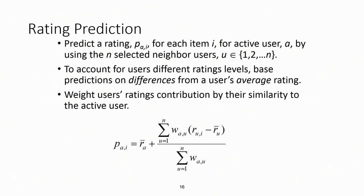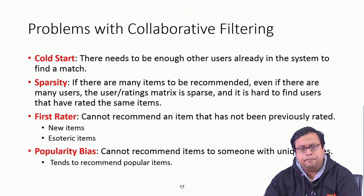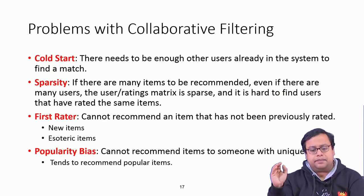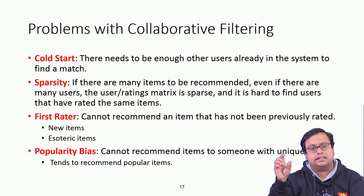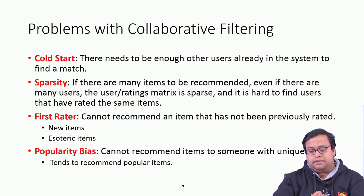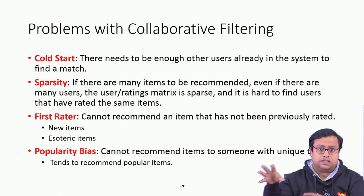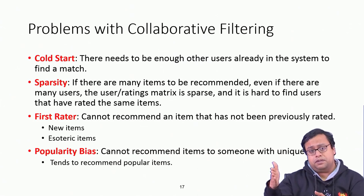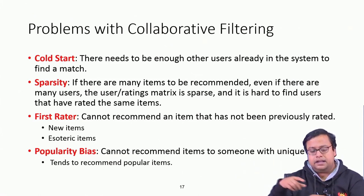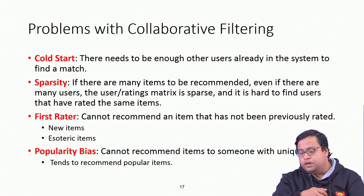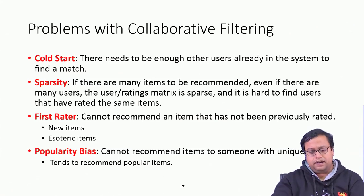The basic problems are the same for all collaborative filtering cases. Cold start: there must be enough other users already in the system to find a match. Sparsity: with many items and many users, the user-rating matrix is sparse and it is hard to find users who have rated the same items. First-rater problem: an item that has never been rated cannot be recommended. Popularity bias: niche products with unique tastes cannot easily be recommended.